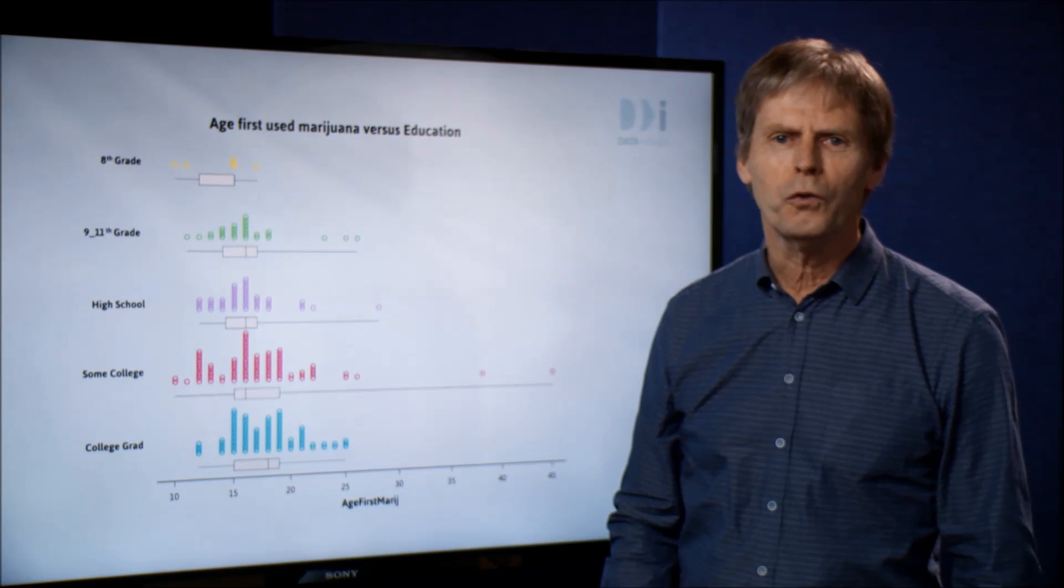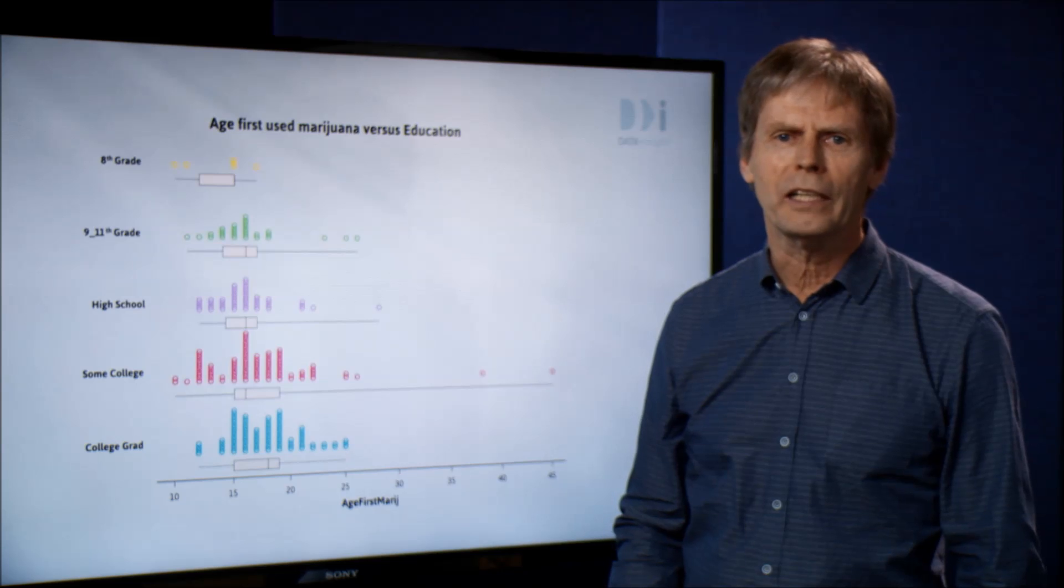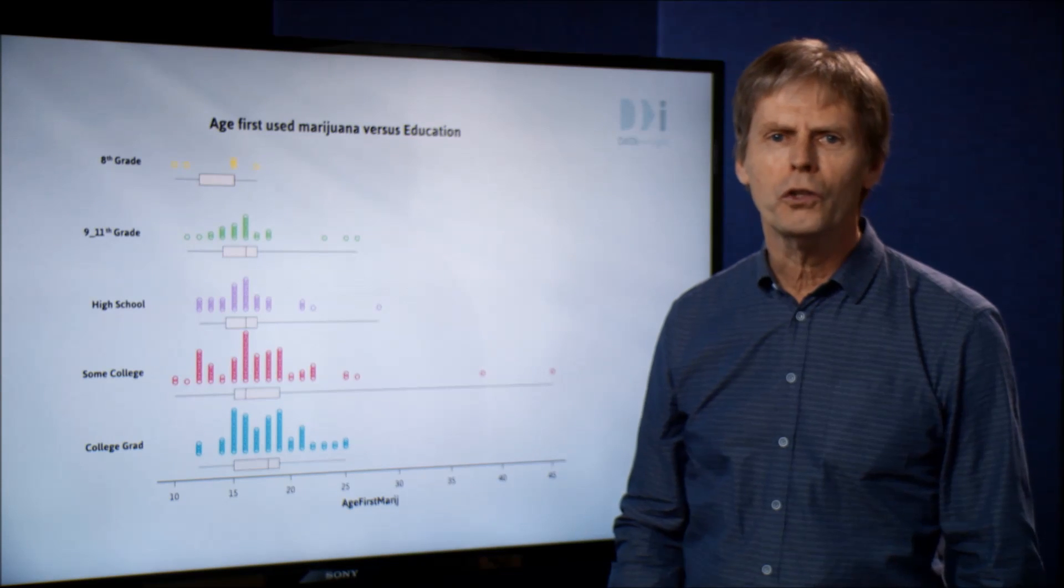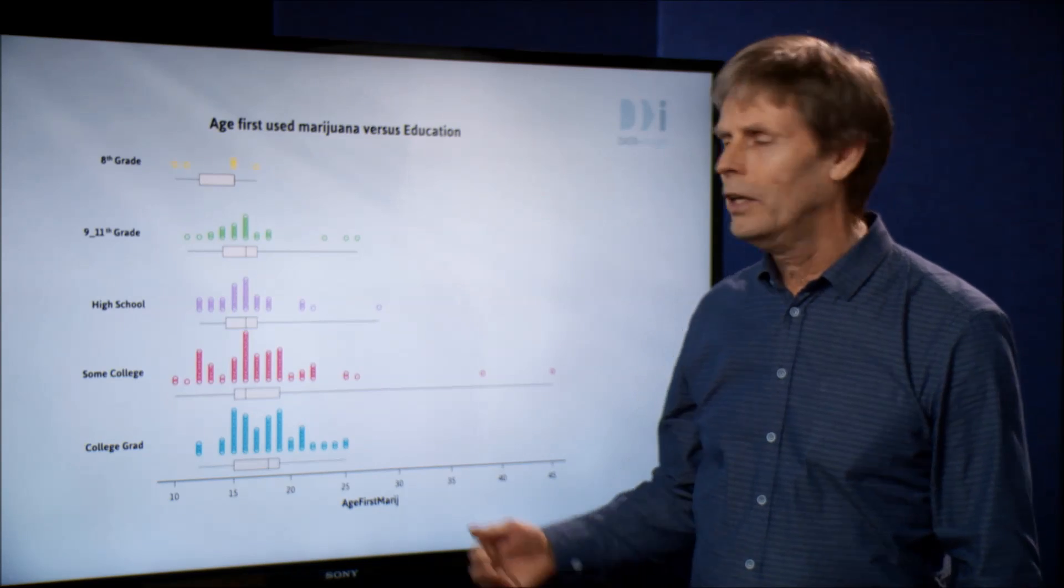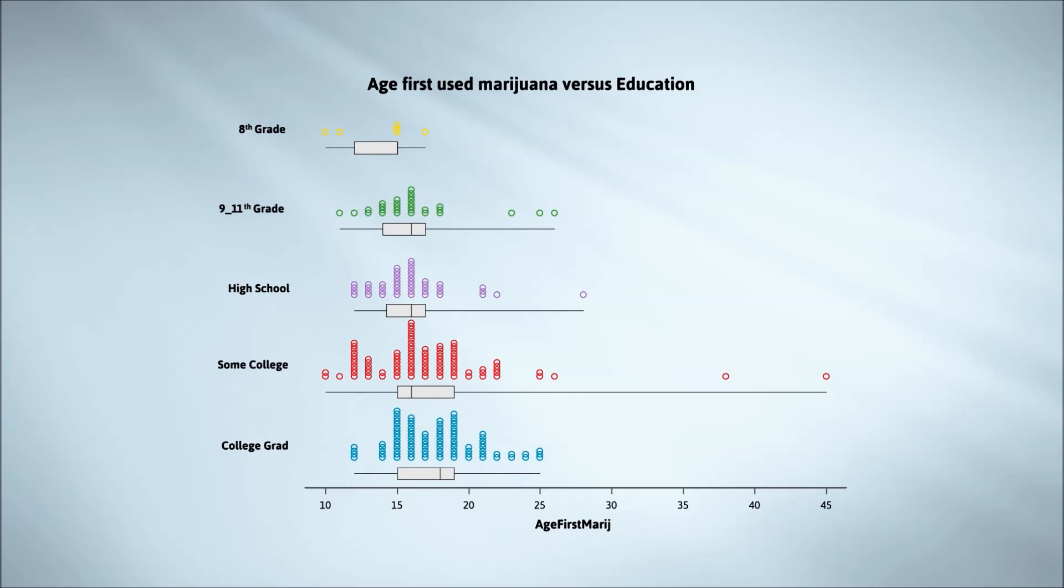Although these things are useful for grasping how things are for a single variable, they're even more useful for getting a handle on how things change, as in this plot constructed to investigate the relationship between first marijuana use and educational attainment level. But we're getting ahead of ourselves here.